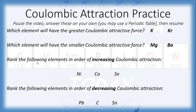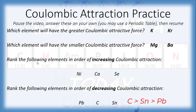In the last example, we rank lead, carbon, and tin in order of decreasing Coulombic attraction — strongest to weakest. All three are in the same column, the same family. When comparing elements in a vertical column, both the number of protons and the number of energy levels increase together, so distance is the determining factor. Going from decreasing order, the strongest Coulombic attraction comes from the smallest atom with the fewest energy levels: carbon first, then tin, and finally lead — which has the greatest number of energy levels, the greatest distance, and therefore the weakest Coulombic attractive force.